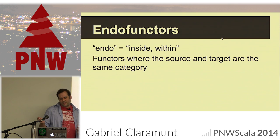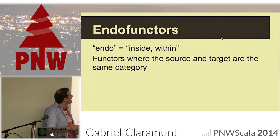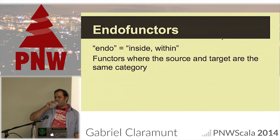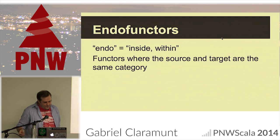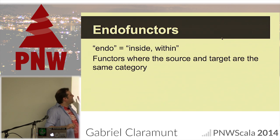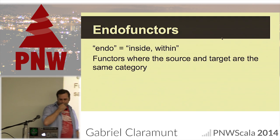If you start reading about functors you have endofunctors, and 'a monad is just a monoid in the category of endofunctors.' The thing is, endofunctors are just functors where the source and target category are the same — the mapping goes back to the same category.